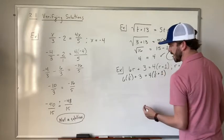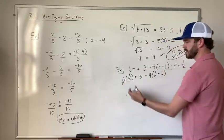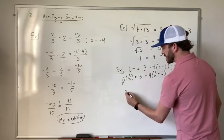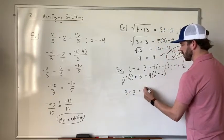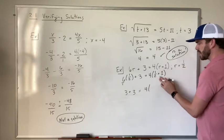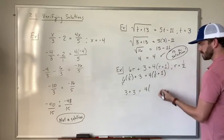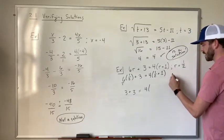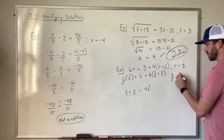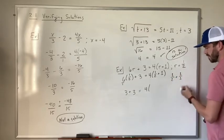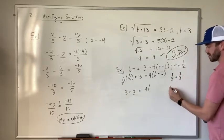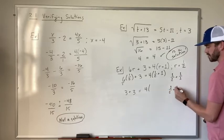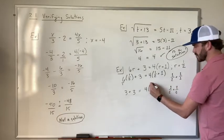6 times 1 half is 6 over 1. That's going to have given us 3. 3 plus 3 is equal to 4 times 1 half plus 1. And if we take this off to the side, we get 1 half plus 1 over 1. We find a common denominator. That's going to be 2. So that's going to be 1 half plus 2 over 2. That's going to give us 3 halves.